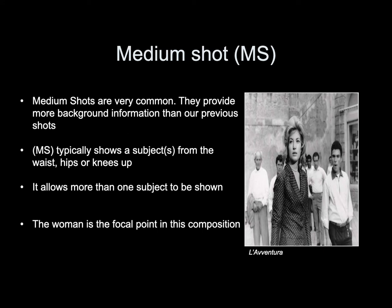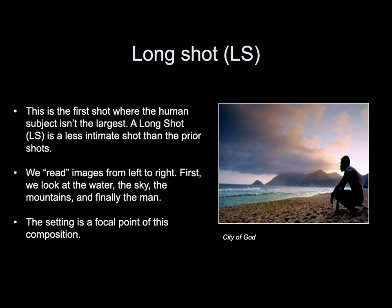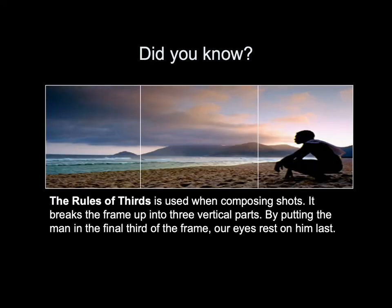Navigating the image from L'Avventura in depth, we can conclude that the woman is the focal point in the composition. The long shot is the first shot where the human subject isn't the largest element. It is less intimate than prior shots. We read images from left to right — first we look at the water, the sky, the mountains, and finally the man. The setting is the focal point. The rule of thirds breaks the frame into three vertical parts; by putting the man in the final third, our eyes rest on him last.